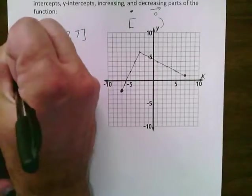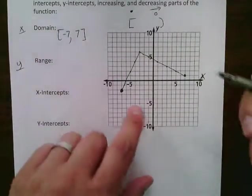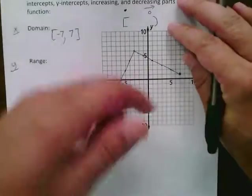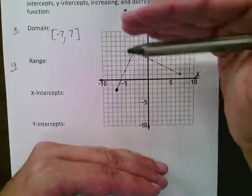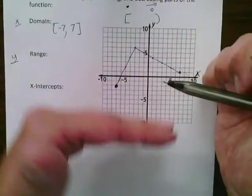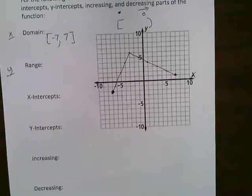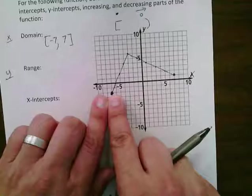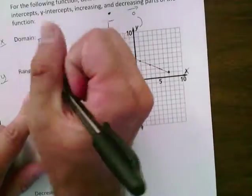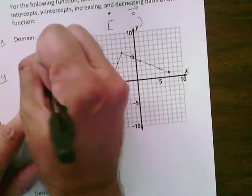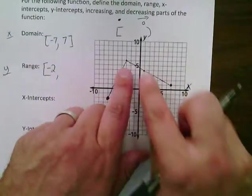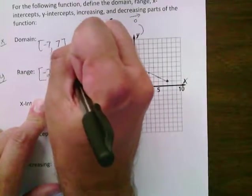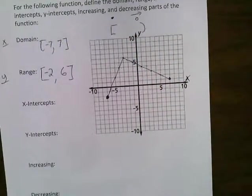Then we have range, which is going to worry about y values. The y axis goes up and down. So we're going to worry about the lowest point we can go and the highest point we could go. For range, we're going to worry about lowest and highest. The lowest we could possibly go is this point right here, which we're concerned about y when y is negative 2. The highest point we can go on this graph is when y is 6. So my range is going to be from negative 2 to 6.